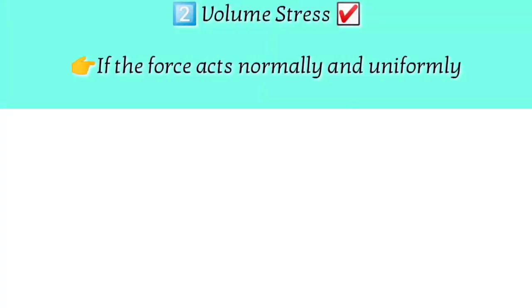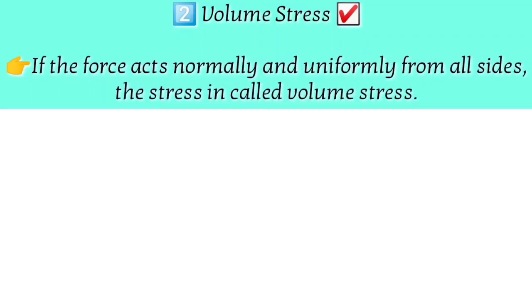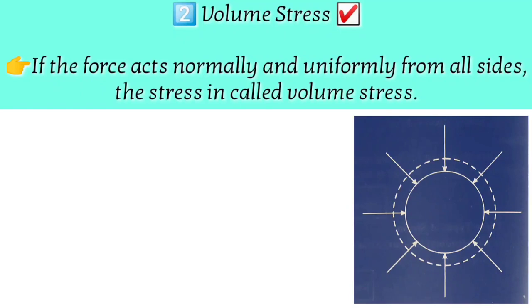Volume stress occurs when the force acts normally and uniformly from all sides — this stress is called volumetric stress. When an object is placed in a fluid, the fluid exerts a normal force in all directions, causing a change in volume. For example, when a ball is placed in water, the normal force on the surface of the ball develops a restoring force — the restoring force per unit area is volumetric stress.